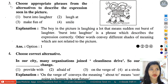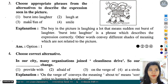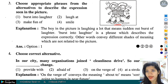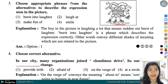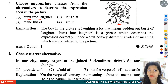Question number 3: Choose appropriate phrases from the alternatives to describe the expression seen in the figure. Options: burst into laughter, add laughed, make fun of, or smile. यह picture denote कर रही है कि यहां पर यह बहुत जोरों से हंस रहे हैं. It means option number 1 हमारे यहां correct होगा - burst into laughter.